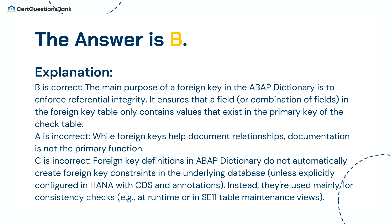The answer is B. B is correct: the main purpose of a foreign key in the ABAP dictionary is to enforce referential integrity — it ensures that a field or combination of fields in the foreign key table only contains values that exist in the primary key of the check table. A is incorrect: while foreign keys help document relationships, documentation is not the primary function. C is incorrect: foreign key definitions in ABAP dictionary do not automatically create foreign key constraints in the underlying database unless explicitly configured in HANA with CDS and annotations; instead, they are used mainly for consistency checks at runtime or in SE11 table maintenance views.